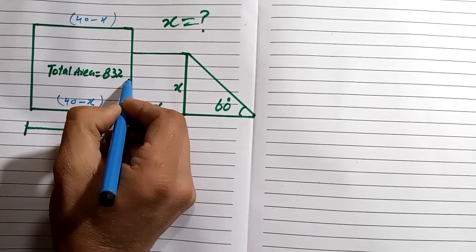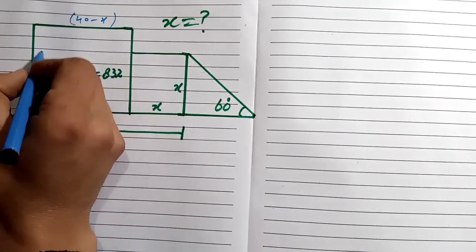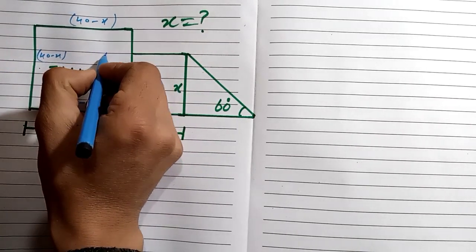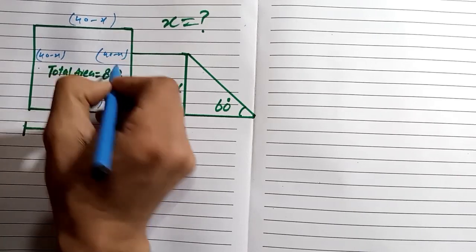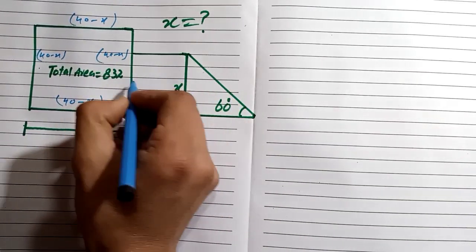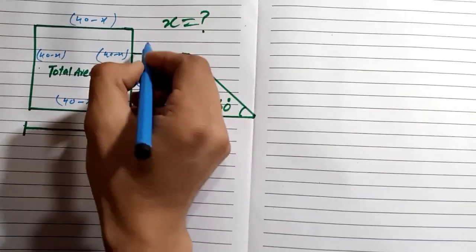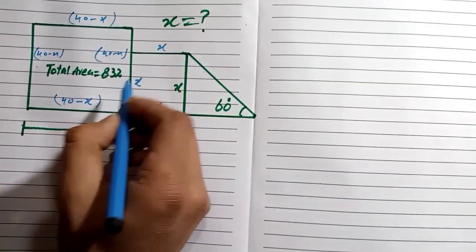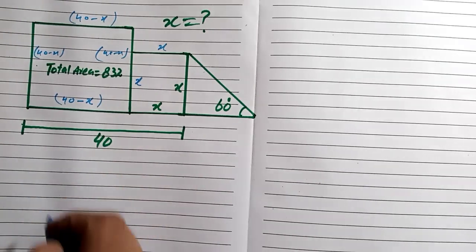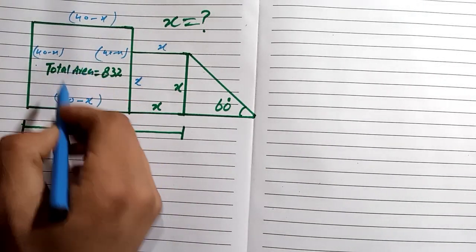So this side is also 40 minus x, and all four sides of the larger square are equal to 40 minus x. For the smaller square, all four sides are equal to x.